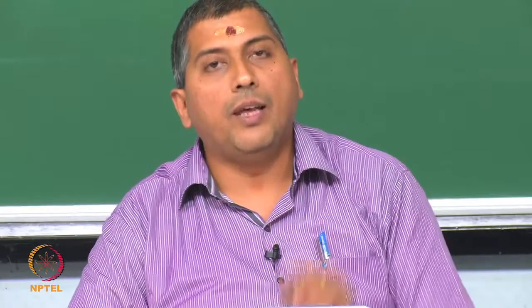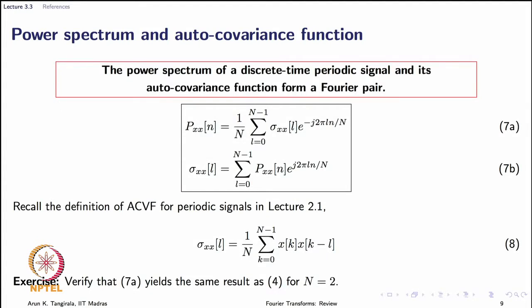I will conclude this module with a very important result which, when extended to random signals, leads to what is known as the Wiener-Khinchin theorem. This result states that the power spectrum of a discrete time periodic signal and its auto covariance function form a Fourier pair. The power spectrum is the Fourier coefficient of the Fourier series representation of the auto covariance function, expressed in equation 7a, while equation 7b gives the Fourier representation of the auto covariance function as a function of lag L.